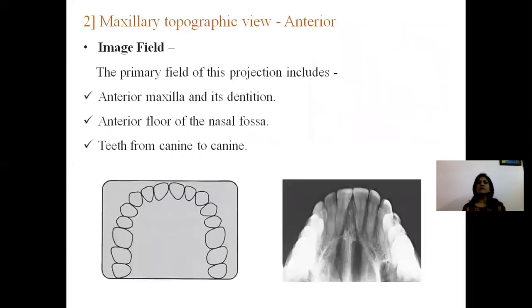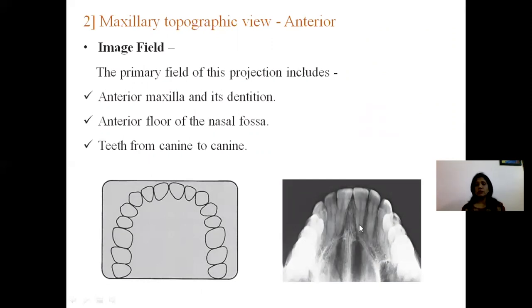The second view is the maxillary topographic anterior view. There is a difference between the cross-sectional and anterior topography. The image field for anterior topography includes the anterior maxilla, the anterior floor of the nasal fossa, and teeth from canine to canine. All the roots of the anterior teeth can be seen very well in the maxillary topographic image.